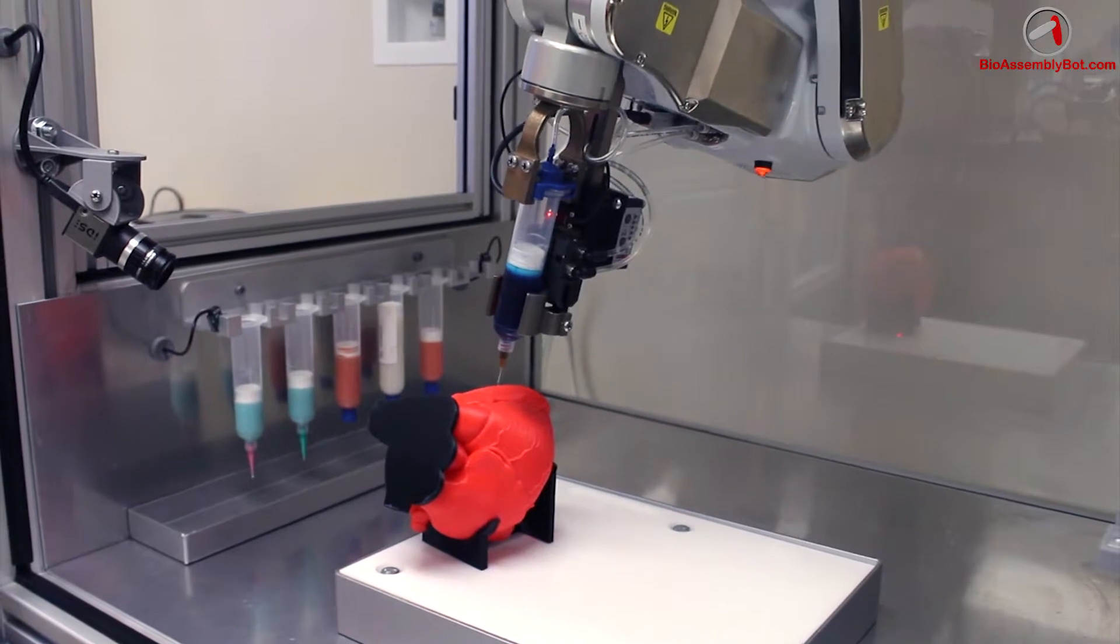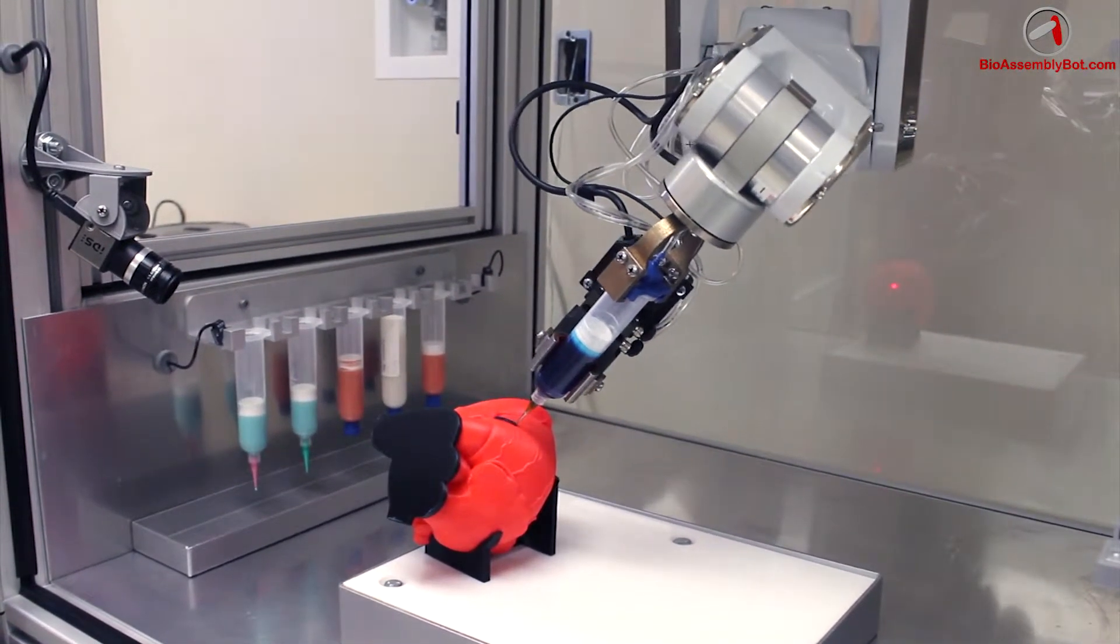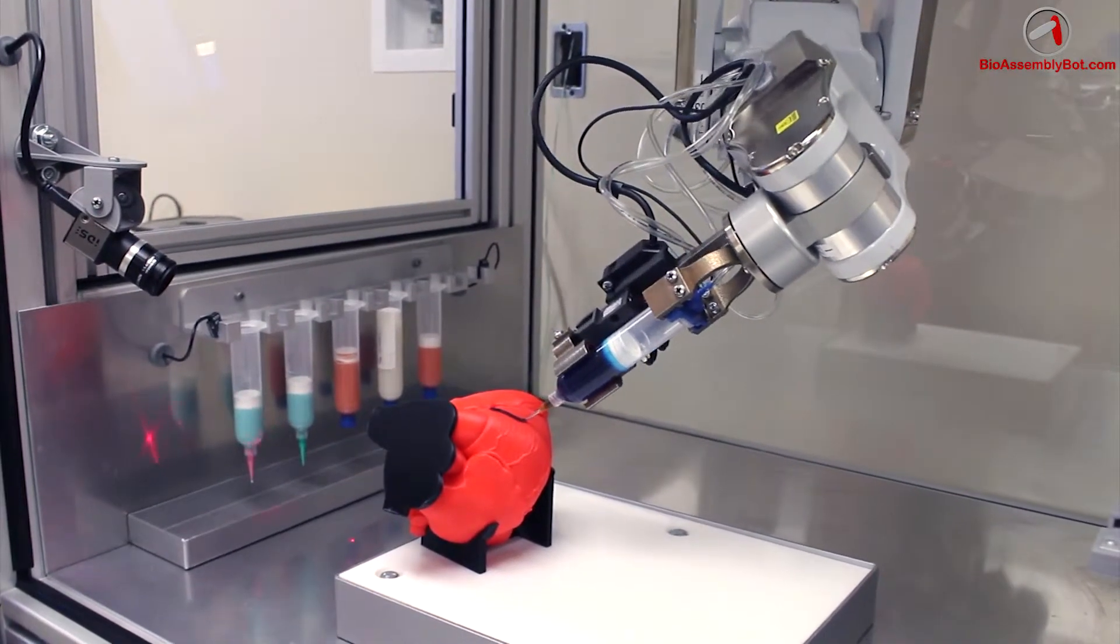The robot then proceeds to move to the pre-existing heart model. The large caliber feed vessel, or artery, is printed first,